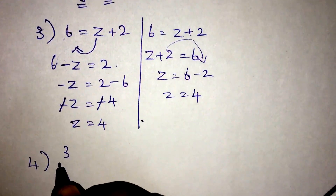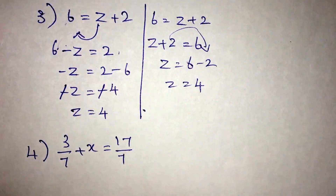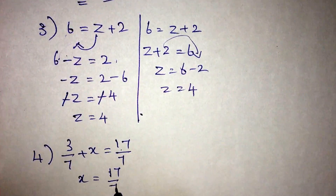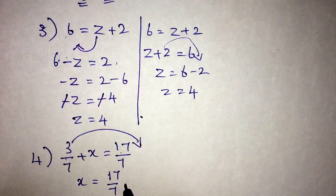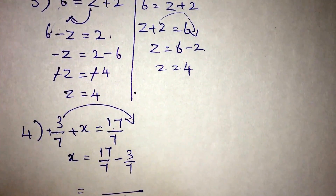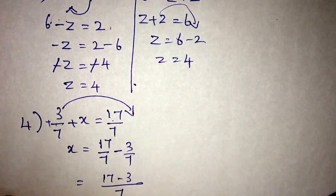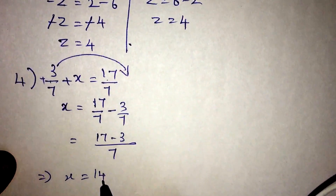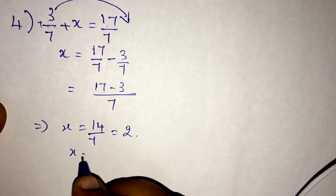Question number 4: 3 by 7 plus x is equal to 17 by 7. Taking the 3 by 7 to the other side, it becomes minus 3 by 7. Taking the LCM of 7, it becomes 17 minus 3, so x equals 14 by 7, which is equal to 2.